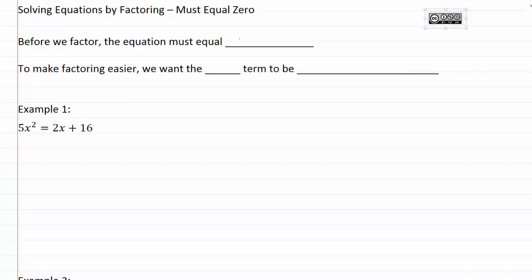In order for our product rule to work, we need to have a zero. So to make factoring easier, we're going to want our x squared term to be positive. So we want a positive number in front of our x squared.